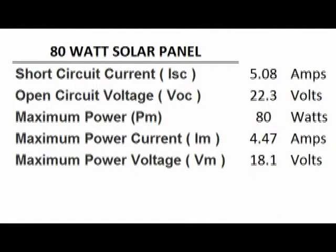You're not going to run with a short circuit, and you're not going to run at just open circuit voltage. So there is a point called the maximum power point, which for this panel is 80 watts — that's why it's called an 80-watt panel. That comes at a maximum power current of 4.47 amps, which is less than the short circuit current, and at a maximum power voltage of 18.1 volts, which is less than the open circuit voltage. Multiplying 4.47 by 18.1 gives us 80 watts.